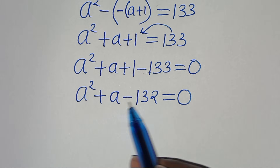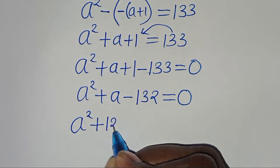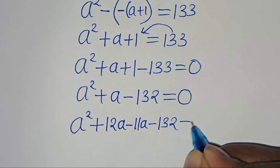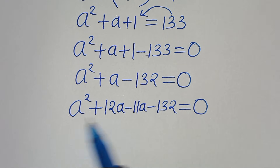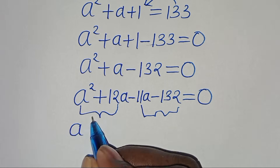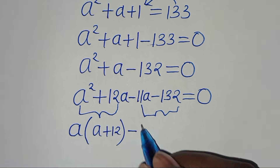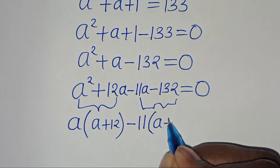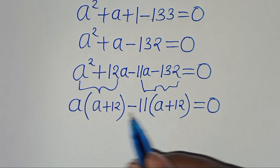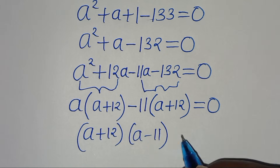This is a quadratic equation which we solve by factorization, giving a squared plus 12a minus 11a minus 100/3 equals 0. Factoring, we get a times a plus 12 minus 11 times a plus 12 equals 0, which simplifies to a plus 12 times a minus 11 equals 0. So a plus 12 equals 0 or a minus 11 equals 0.